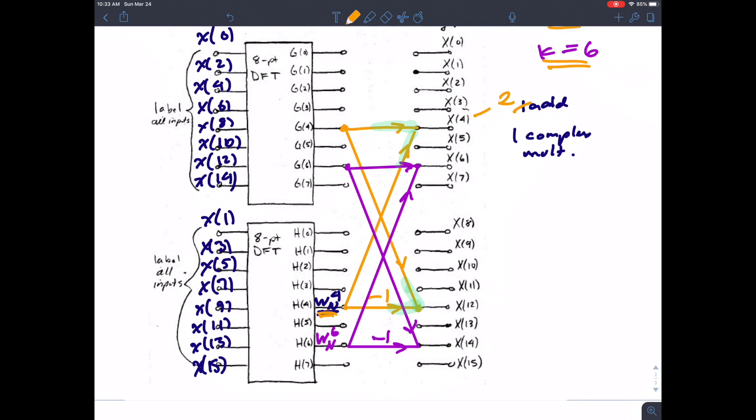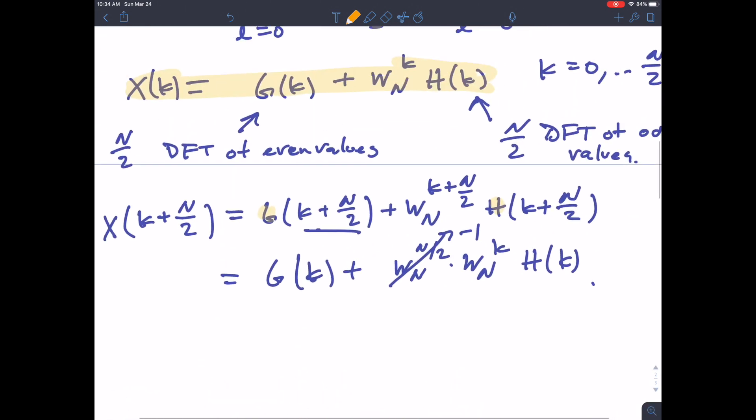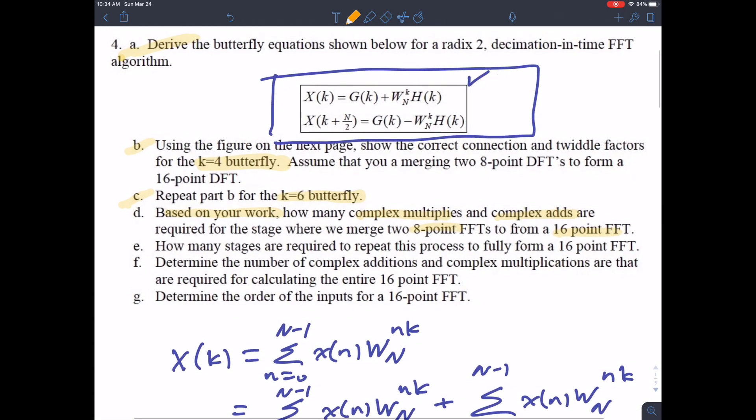So if I have eight of these butterflies and each has two adds, that would give me a total of 16 complex adds and eight complex multiplies for this stage where we merge two 8 point DFTs to one 16 point DFT. So the next question is, we've answered this one, we have 16 complex multiplies and eight, I'm sorry, backwards, eight complex multiplies and 16 complex adds for the answer on part D.